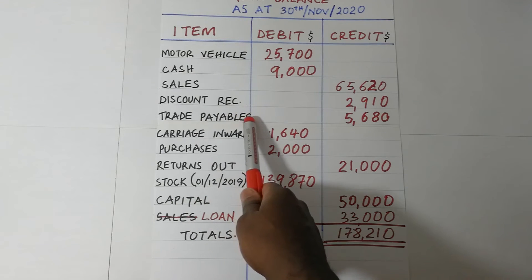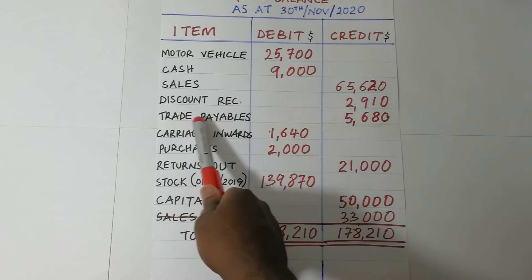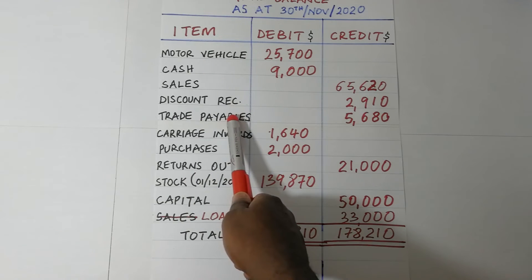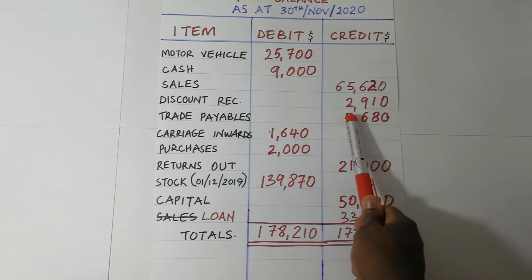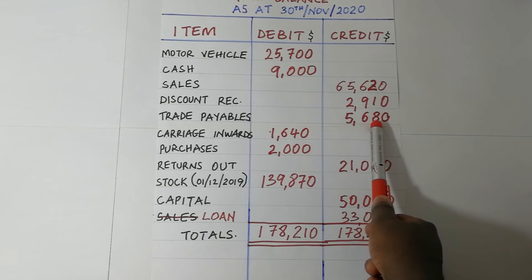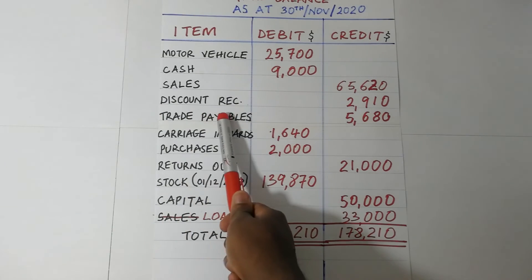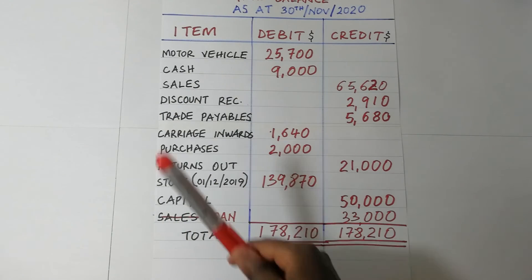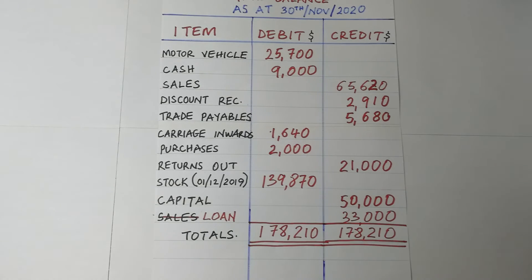Regarding trade payables — the other name is creditors. Creditors are a liability to the business and have a credit balance. Now, if it is instead trade receivables, those are debtors — assets to the business — and trade receivables have a debit balance.